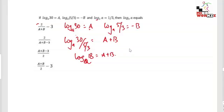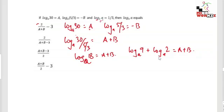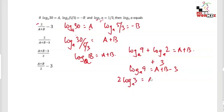We can write log a(18) as log a(9) plus log a(2), which equals a plus b. Now log a base 2 is 1/3, so by interchanging, log 2 base a equals 3. Substituting, log a(9) equals a plus b minus 3. Since log a(9) equals 2·log a(3), we get 2·log a(3) equals a plus b minus 3.